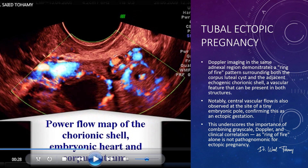Let's look at the Doppler image from the same adnexal region. Notice the ring of fire pattern — but here's the catch: it surrounds both the corpus luteal cyst and the adjacent echogenic chorionic shell. This vascular ring can appear in both structures, so it's not enough on its own to call an ectopic pregnancy. What clinches the diagnosis here is the central vascular flow right at the site of the tiny embryonic pole, confirming this is an ectopic gestation. Always combine greyscale, Doppler, and clinical correlation before making the final call.